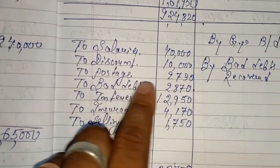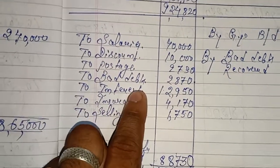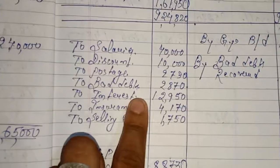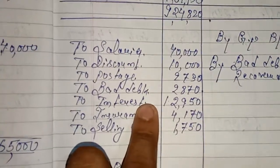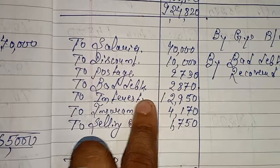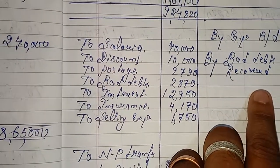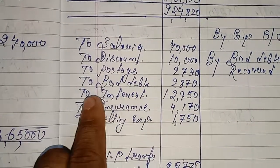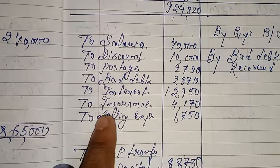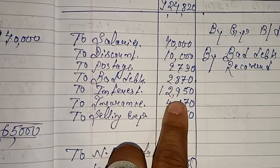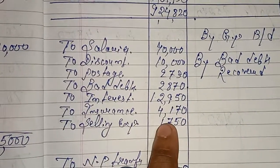To Bad Debts; To Interest — point to be noted: अगर interest के साथ 'received' word दिया हुआ है तब यह credit में आएगा, लेकिन अगर 'received' word नहीं दिया है तो यह debit में आएगा। To Insurance; To Selling Expenses।